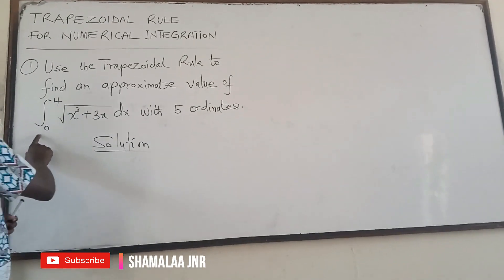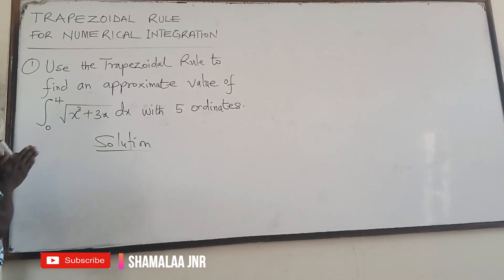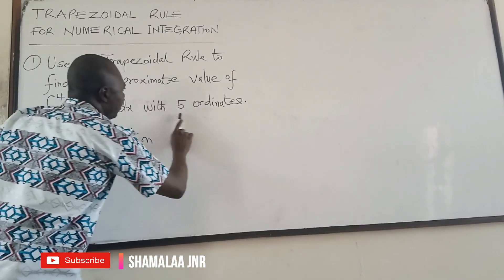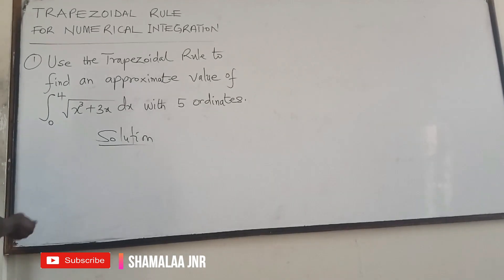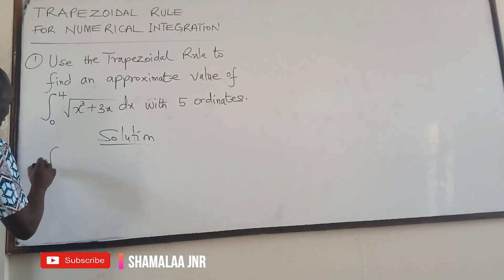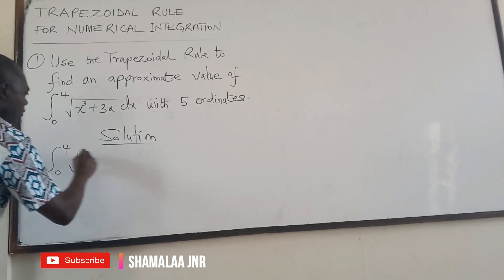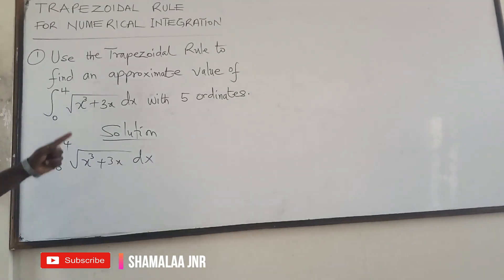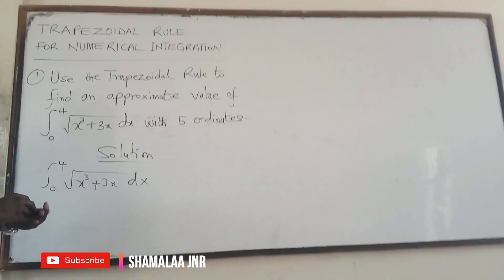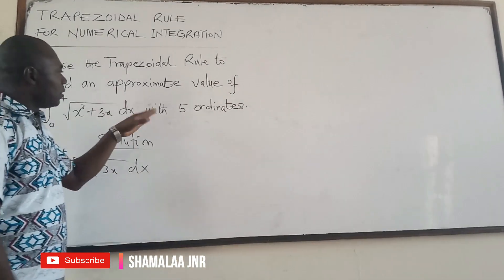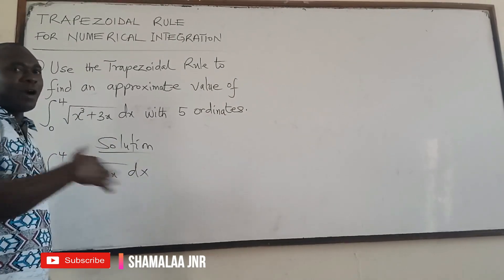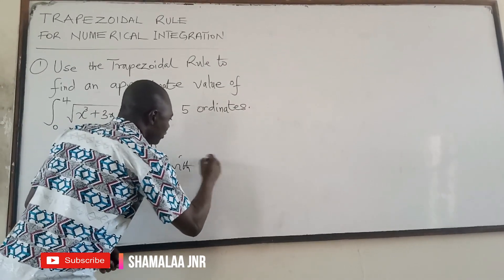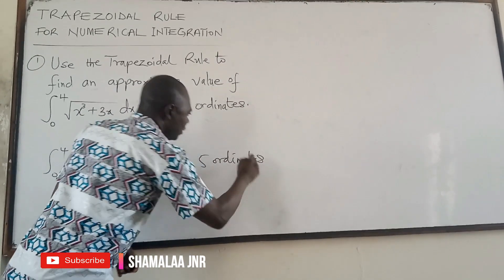We have been given this integral to evaluate and we are saying with five ordinates. The integral is from zero to four of the square root of x cubed plus 3x dx. When they say five ordinates, it means that there are five y-values.